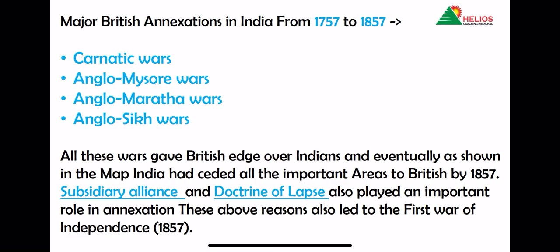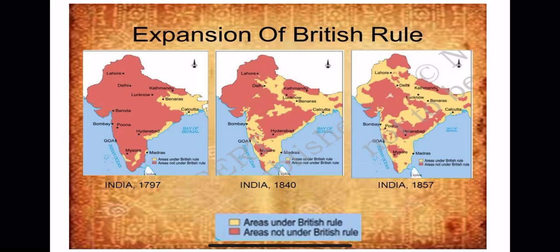This was the reason the British were able to consolidate their empire and make it very large. Two main factors in this annexation period were Subsidiary Alliance and Doctrine of Lapse. We will cover these in detail in future videos. These were also major factors behind the success in the Carnatic Wars, Anglo-Mysore War, Anglo-Maratha War and Anglo-Sikh War. Remember that maximum annexations were made from 1757 to 1857.